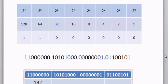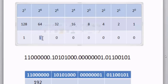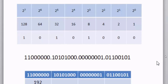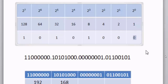The next octet has 1, 0, 1, 0, 1, 0, 1, 0 — let's work that out: 128 plus 32 is 160, plus 8 is 168. The next octet is all zeros with a 1 in the ones place. This is easy — this is the number 1. All zeros and a 1 in the ones place makes the number 1.